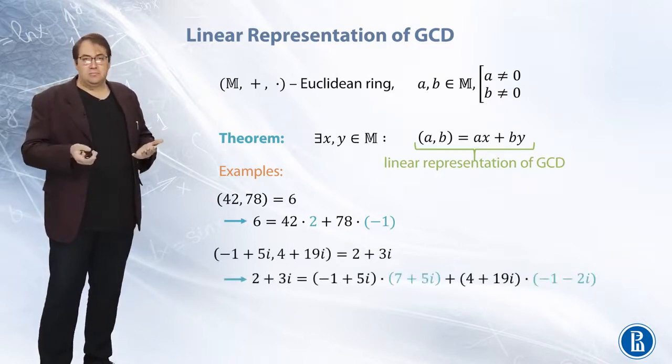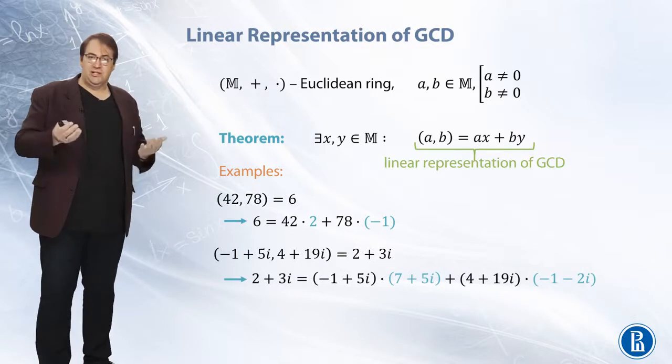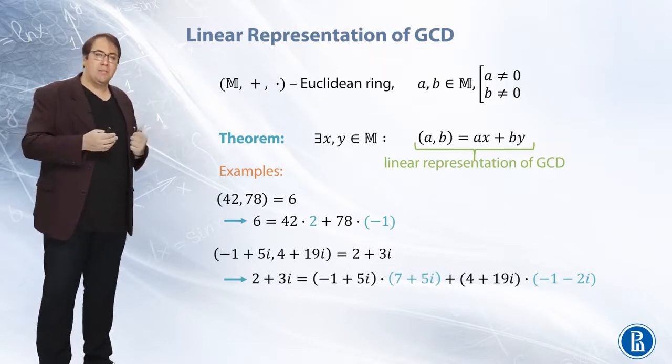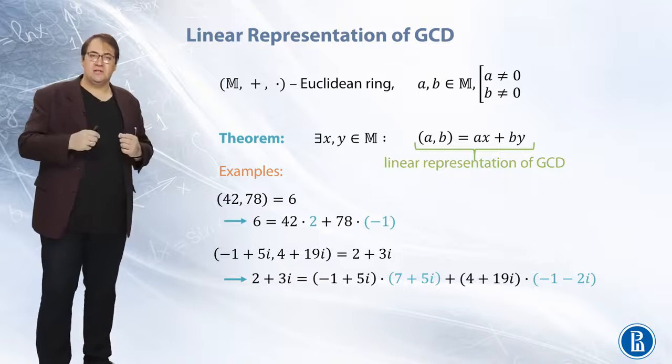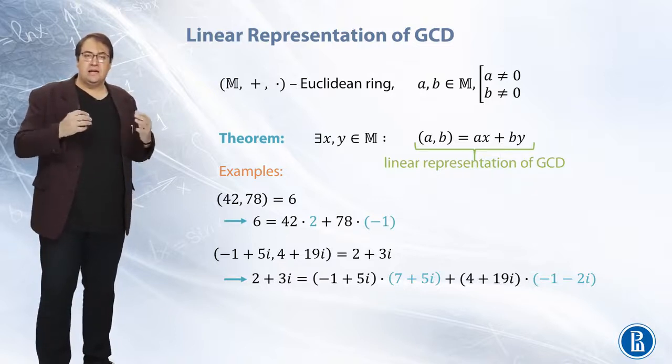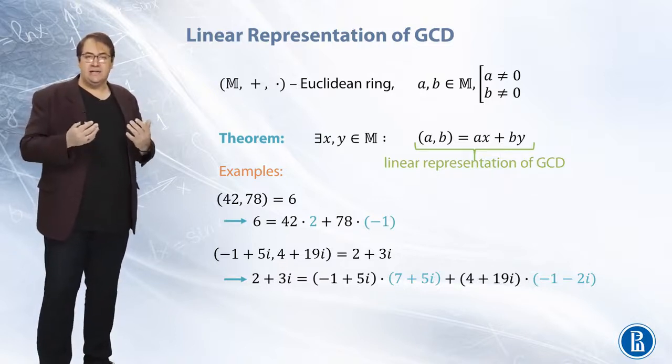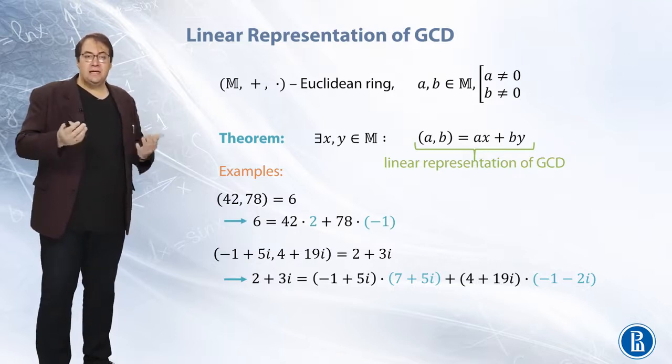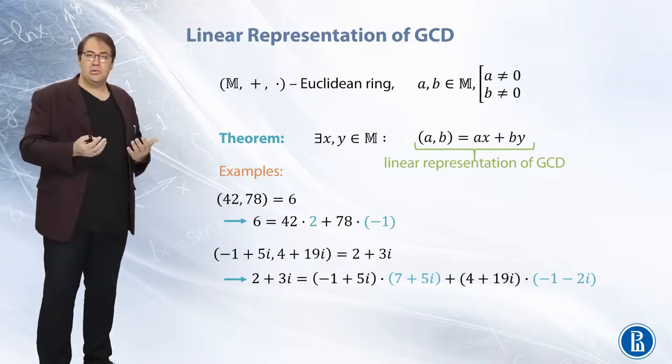Another example, complex integers. If we take the same complex integers as in the previous video and take 2 plus 3i as their greatest common divisor, then according to the theorem, we will find such x and y.